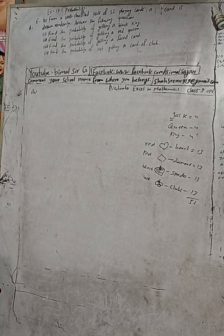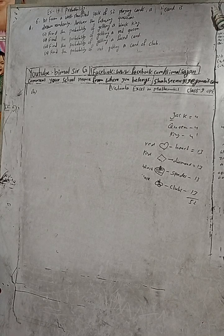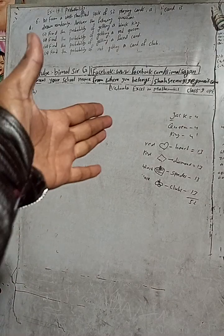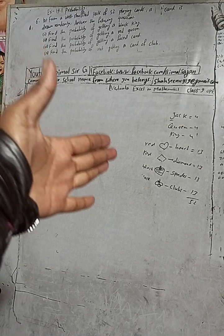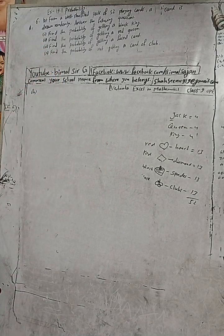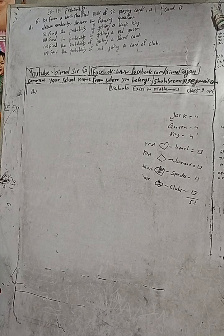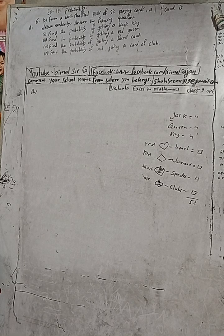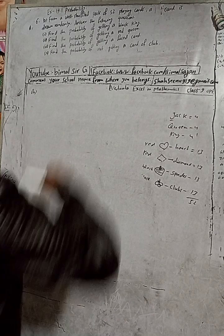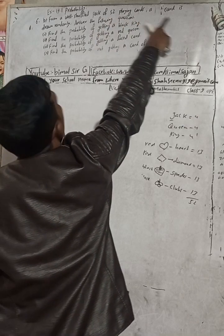Hi Class 9 and 10 students, welcome back to Vimal Surjee YouTube channel. This is question number 6B. I have solved 6A already, and that part is necessary in this part also. This is a question from Exercise 19.1, the probability chapter of Vedanta Excel in Mathematics Class 9. Check the playlist, and if you don't find any videos, comment here.